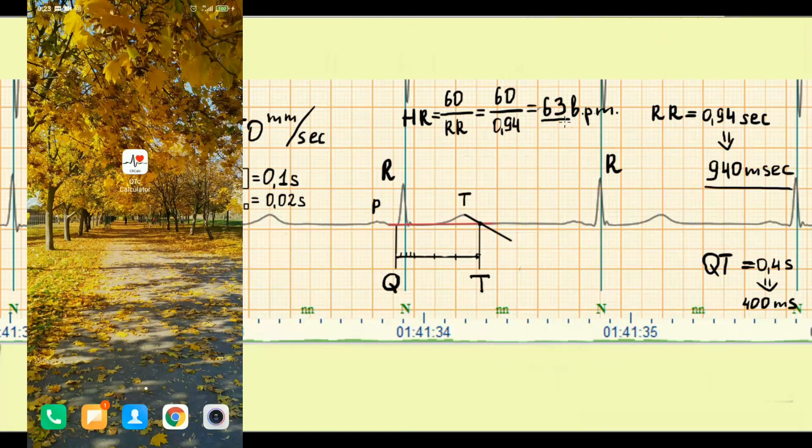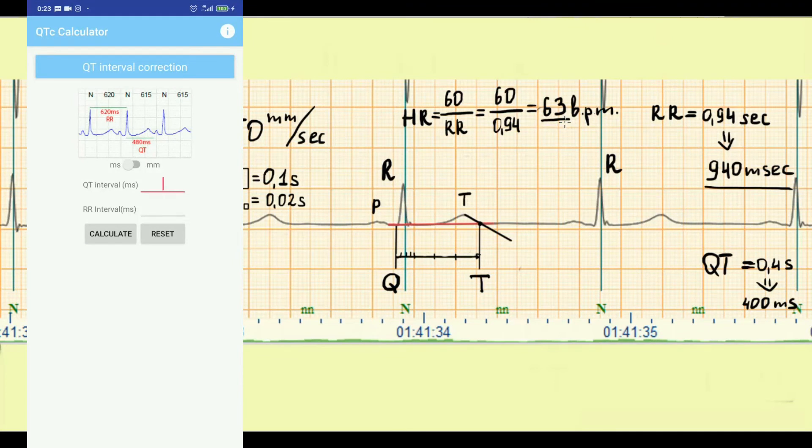There are lots of online calculators or applications for calculation of QTc. In this app we need to put RR interval in ms and measured QT interval. Fortunately apps calculate simultaneously by all common formulas. So, in our example we use Bazett formula and corrected QT is 413. The links for downloading apps for your smartphone you can find in description.